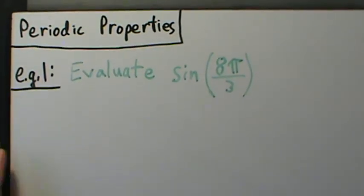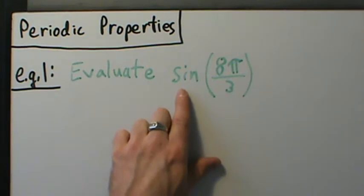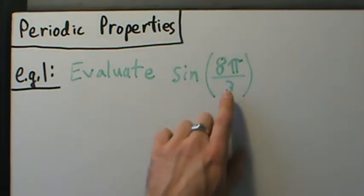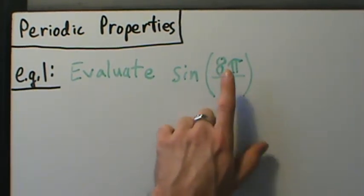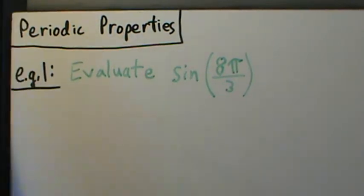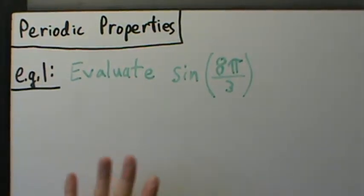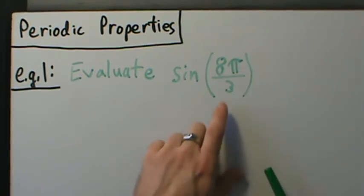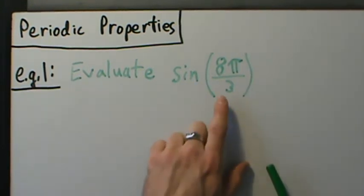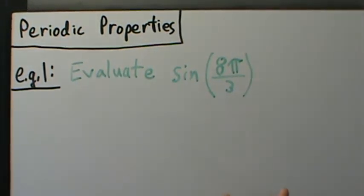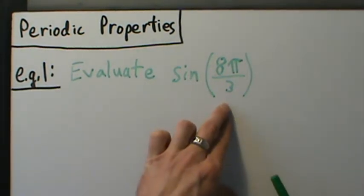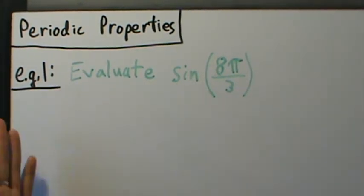Since we're dealing with sine, remember sine has period 2π. What we do is add or subtract 2π to 8π over 3 as often as we need to, to get some angle between 0 and 2π radians. We ask ourselves: is 8π over 3 larger than 2π, or is it smaller than 0? That's going to tell us whether we subtract 2π or add 2π.